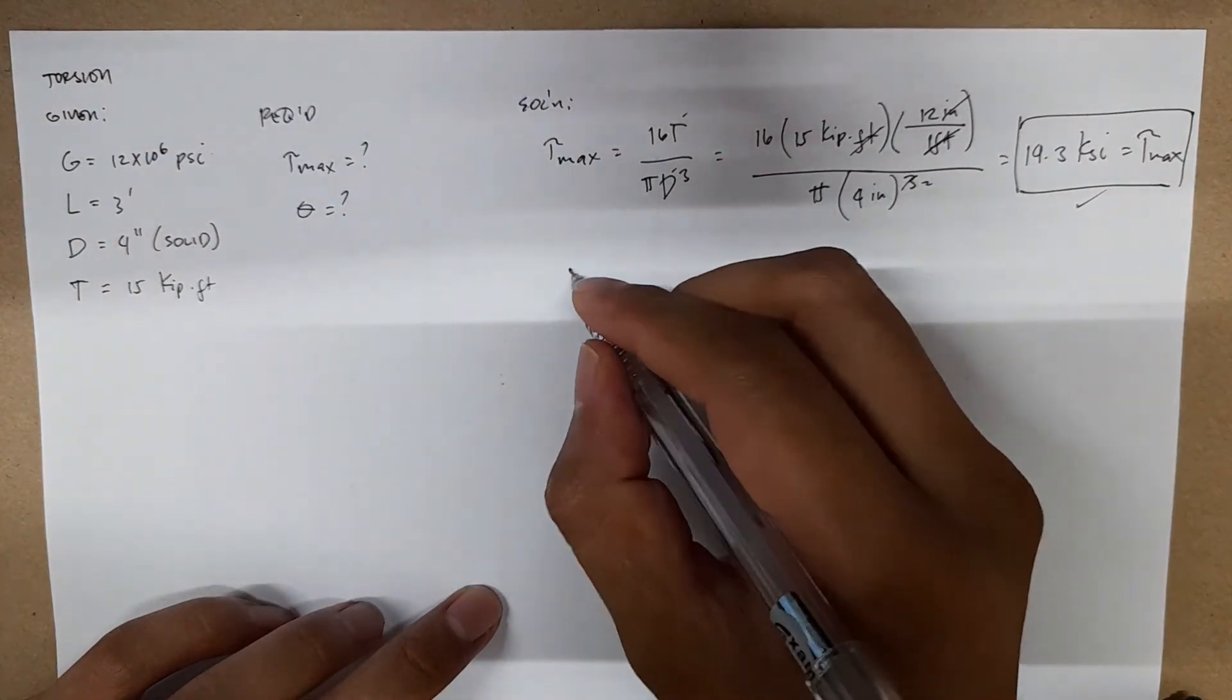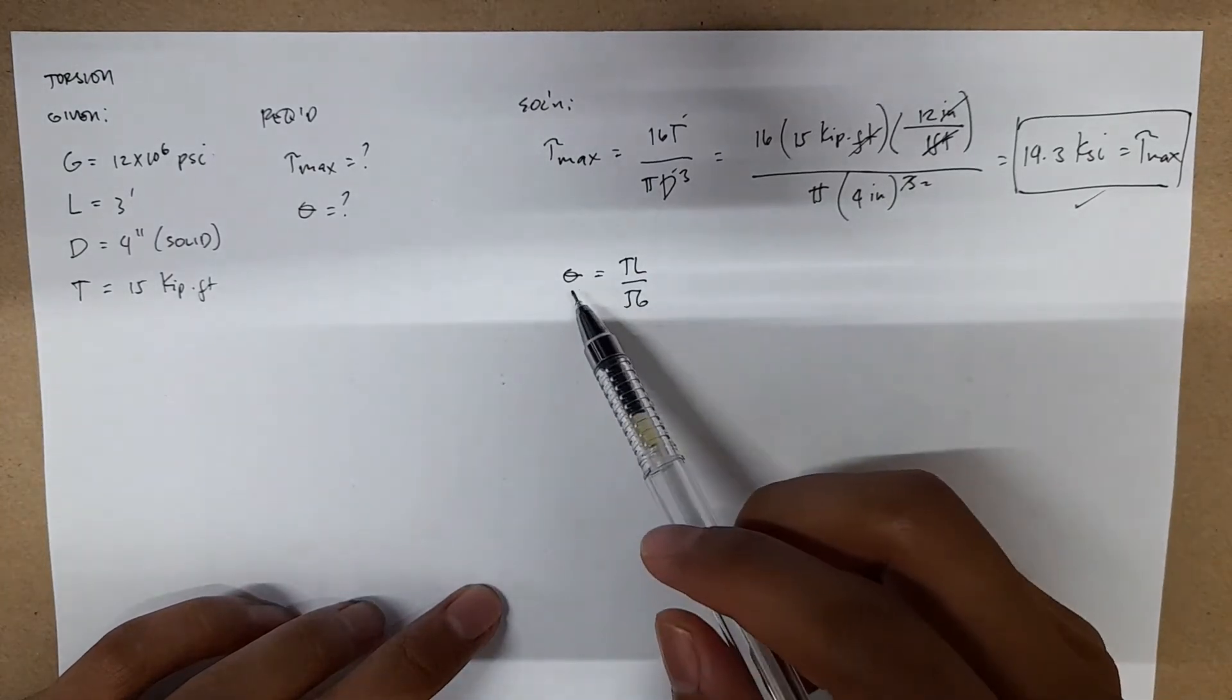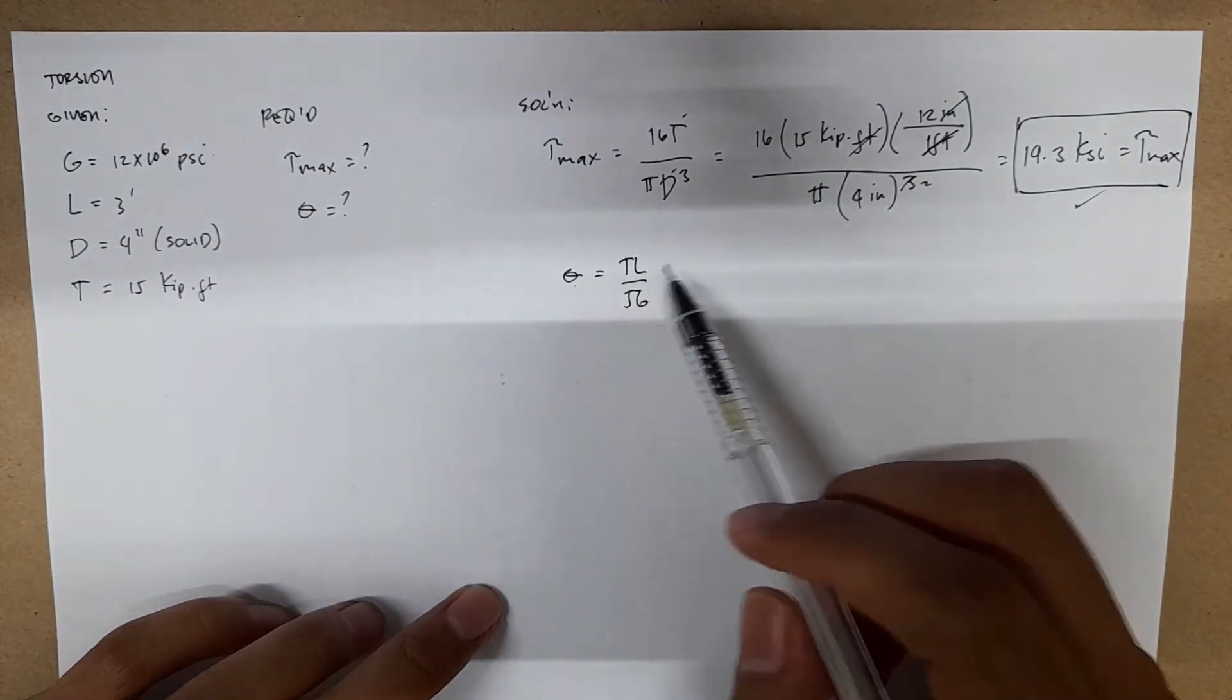For theta, or the angle of twist, that's TL over JG. So theta equals TL over JG.